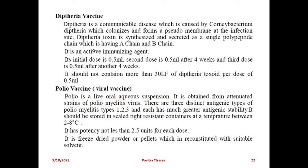The diphtheria vaccine is for diphtheria, a communicable disease caused by Corynebacterium diphtheriae, which colonizes and forms a pseudomembrane at the infection site. Diphtheria toxin is synthesized and secreted as a single polypeptide chain having an A chain and B chain. It is an active immunizing agent. The initial dose is 0.5 ml, second dose is 0.5 ml, and third dose after four weeks is again 0.5 ml. It should not contain more than 30 LF of diphtheria toxin per dose. Temperature: 2 to 8 degrees Celsius.